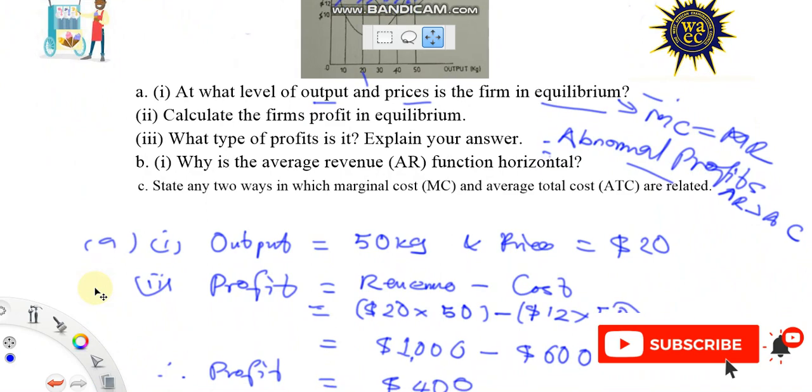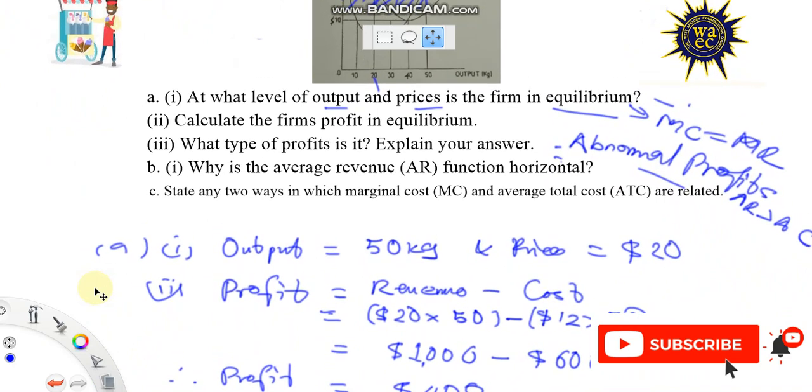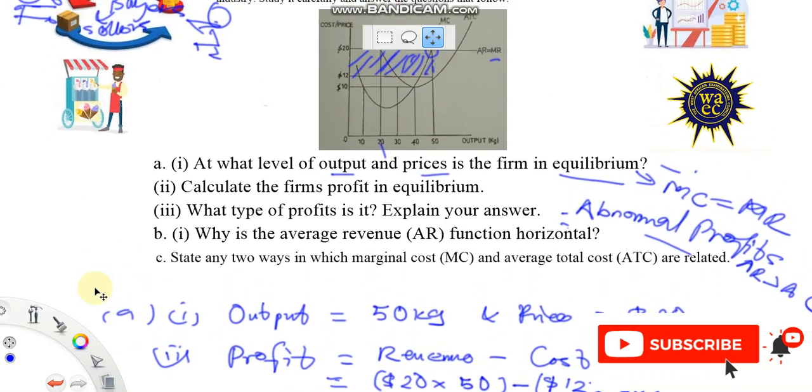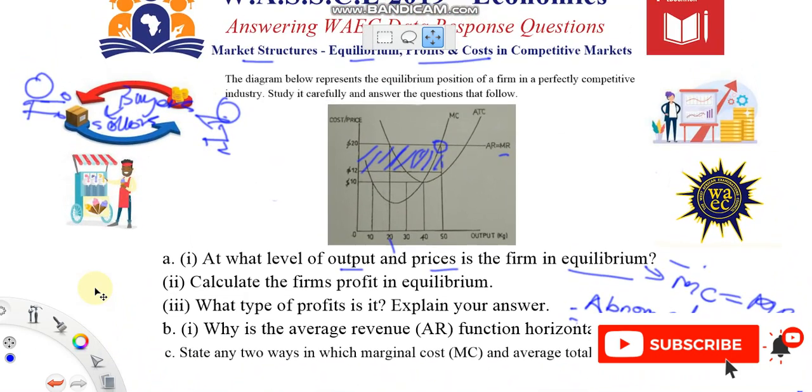We've been asked, why is the average revenue function horizontal? Remember, they say function here, but that function is represented by this curve, which is just a line here, really.